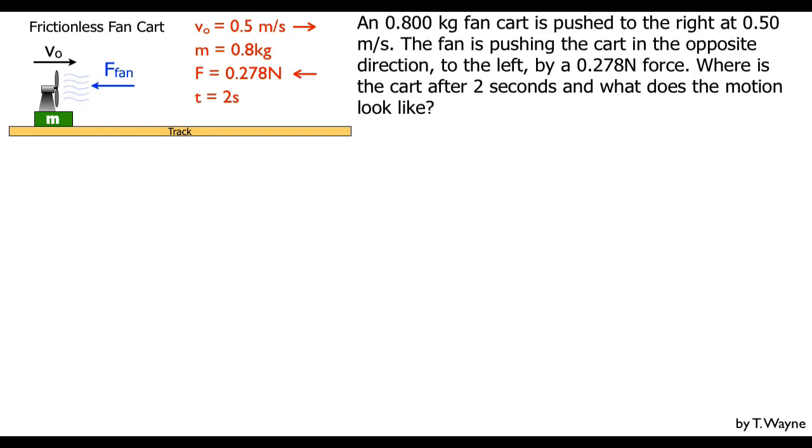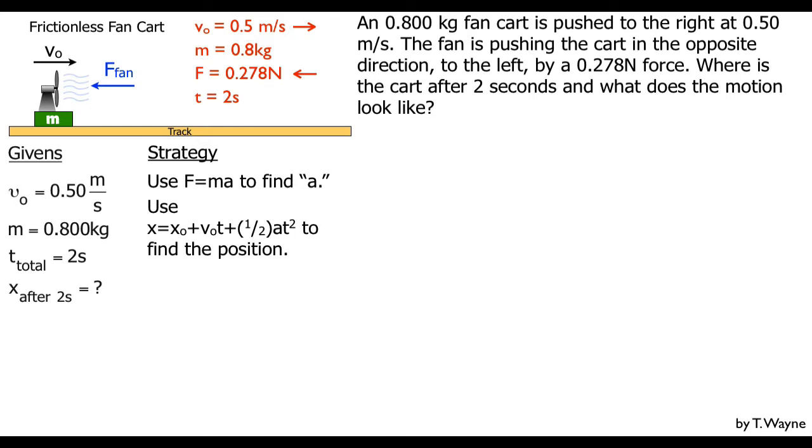So when solving the problem, I'll look at what I know. The givens are initial velocity v₀ = 0.50 m/s, mass m = 0.800 kg, and total time t_total = 2s. A strategy for solving this: I'm looking for x, how far it travels, so I'd like to use x = x₀ + v₀t + ½at². But I don't have an acceleration. However, I can find that using F = ma. So my strategy first is use F = ma to find the acceleration, then use the long equation to find the position after two seconds.